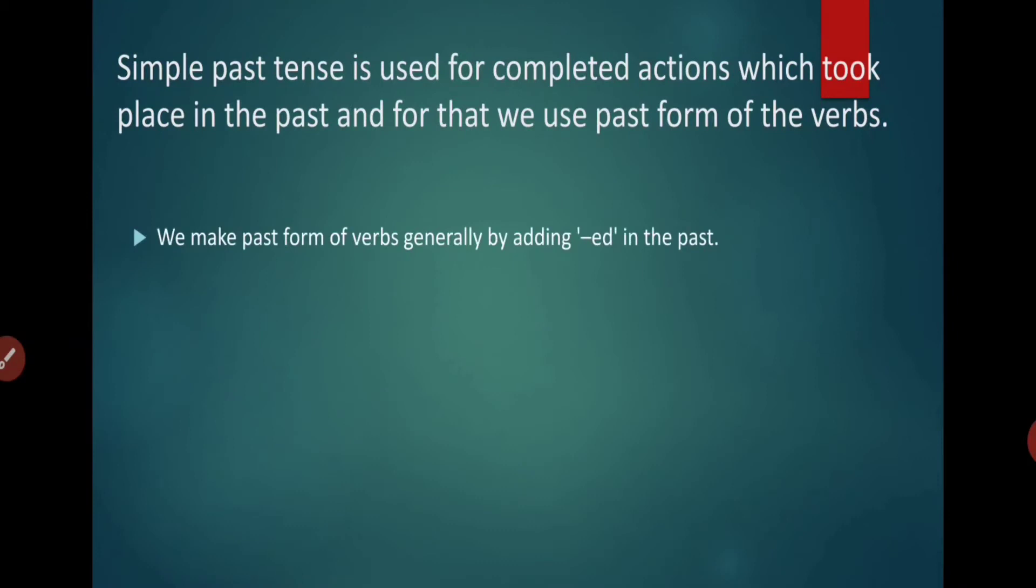So we make past form of verb generally by adding ed in the past. How we make form now? How we make the past form of verb? We generally add ed in the verbs and but some verbs have special past verbs. So some verbs, they have special second form of verb. Those verbs are known as irregular verbs.